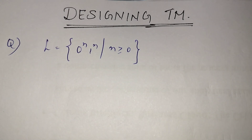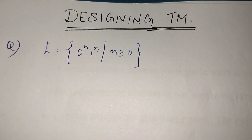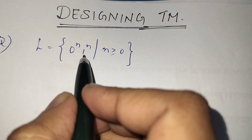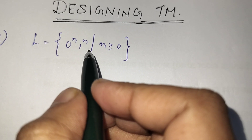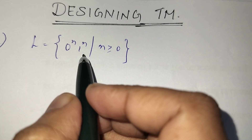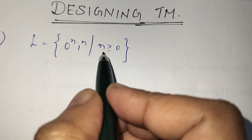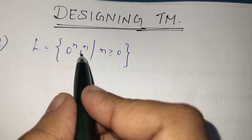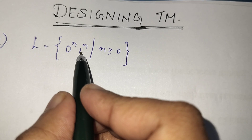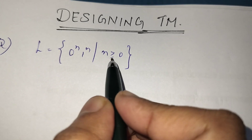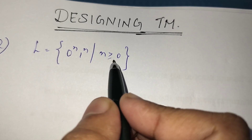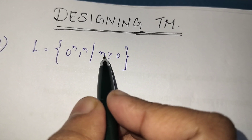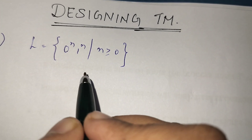The next topic is designing a Turing machine. The language is 0^n 1^n such that n is greater than or equal to 0 — n number of 0s followed by n number of 1s. The value of n is greater than or equal to 0, so whenever the tape is empty it should also accept the string.